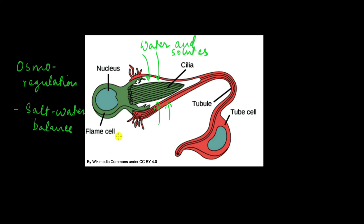And another thing is excretion itself. By excretion we usually mean getting rid of nitrogenous waste products. So nitrogenous wastes are excreted by these flame cells.